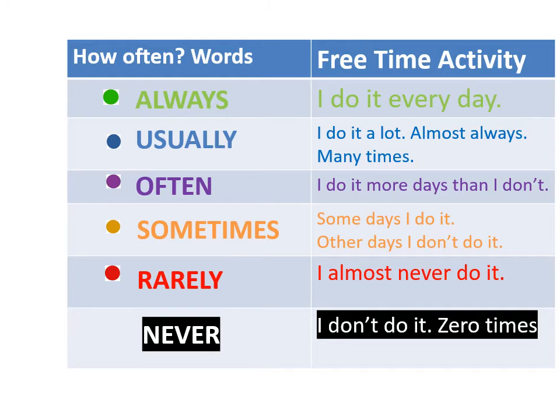'Sometimes' — some days I do it, other days I don't — nghĩa là số thời gian làm và không làm bằng nhau. 'Rarely' — I almost never do it — hầu như tôi không làm, có làm nhưng rất ít. 'Never' — I don't do it, zero times — tôi không bao giờ làm chuyện đó.